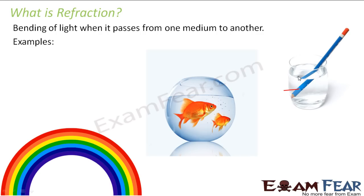Due to the bending of light rays, the object appears a little different from what it actually is. Similarly, if you look at an aquarium, you see a fish visible in a different way — there is an actual position and an apparent position. The position where the fish actually is and the position where you view the fish are different. That is again due to the phenomenon of refraction, because two media are involved: air and water.